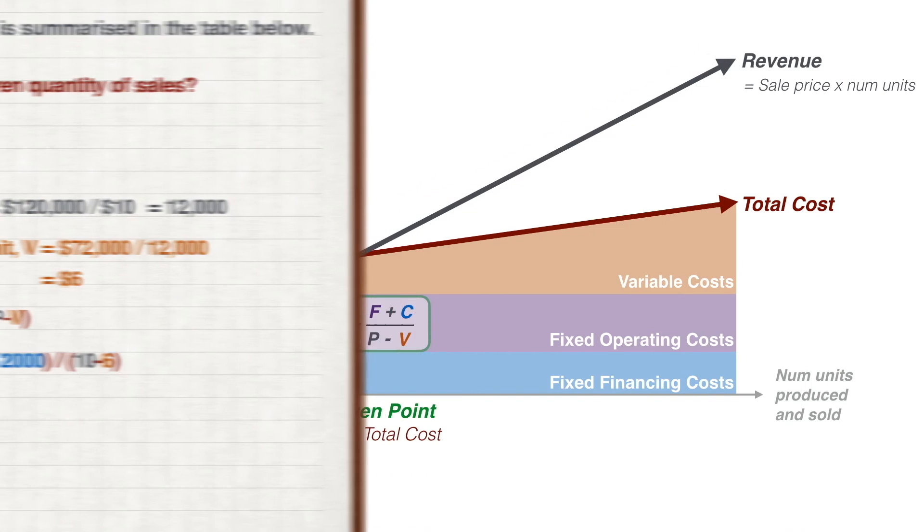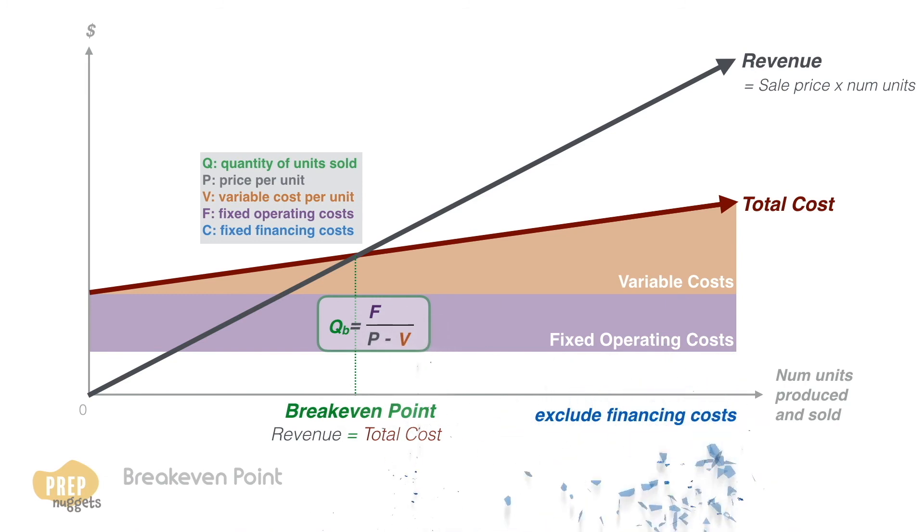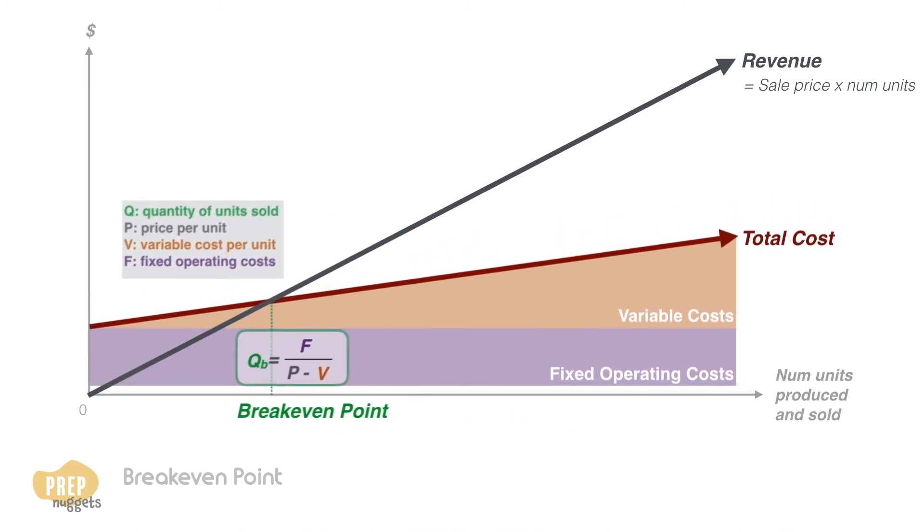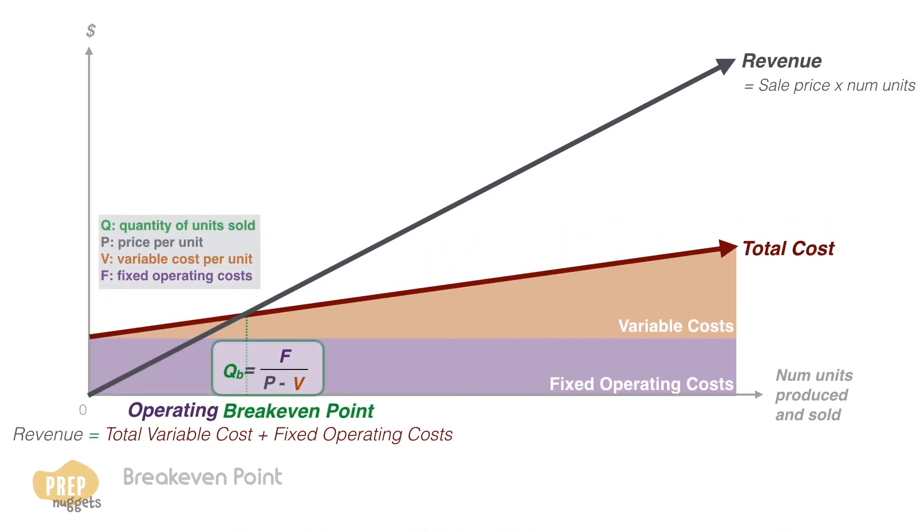And that's essentially the gist of finding the break-even point for a firm. Sometimes you may need to exclude financing costs in order to make better comparisons across companies with different capital structures. This is known as the operating break-even point, which is simply the fixed operating cost divided by the contribution margin per unit. This is the point where the revenue is equal to the total variable cost plus only the fixed operating costs.